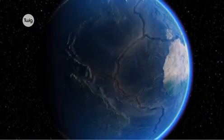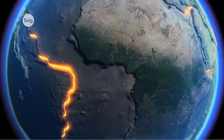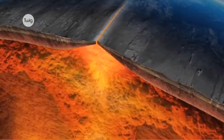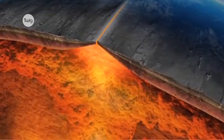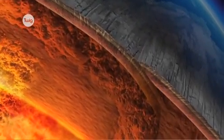The continents are part of great slabs of rock called tectonic plates that make up the Earth's crust. These plates shift as new rock forms, or sinks, towards the Earth's molten core.